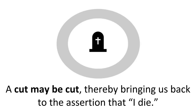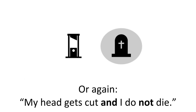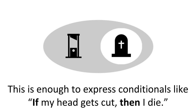A cut may be cut, thereby bringing us back to the assertion that I die. Mere juxtaposition in space suffices to express conjunction, so here we have 'my head gets cut and I die,' or again 'my head gets cut and I do not die.' This is enough to express conditionals like 'if my head gets cut, then I die.'